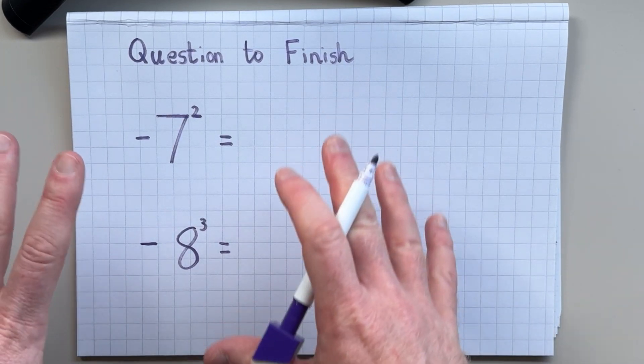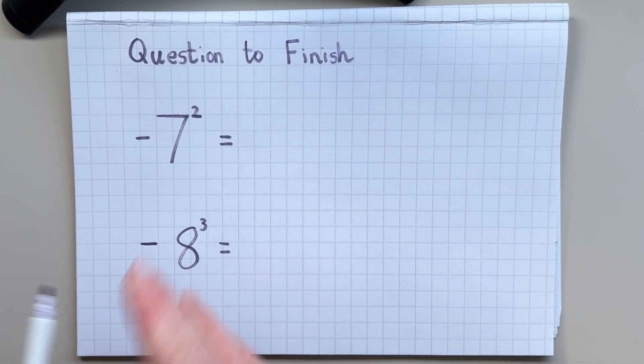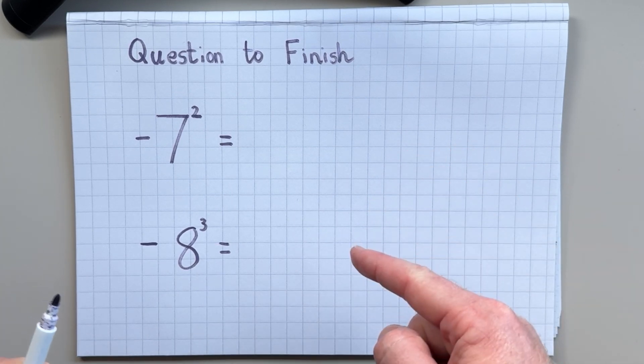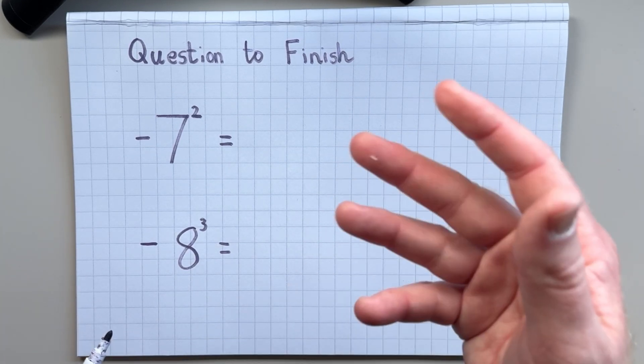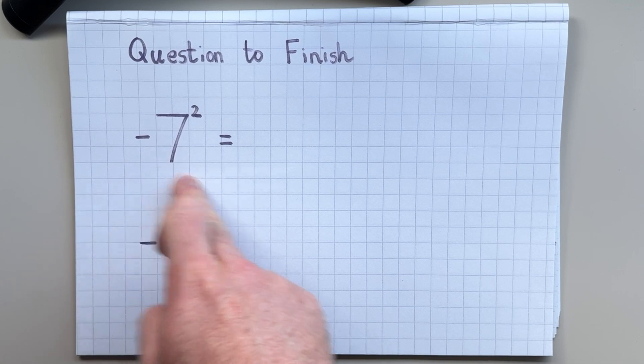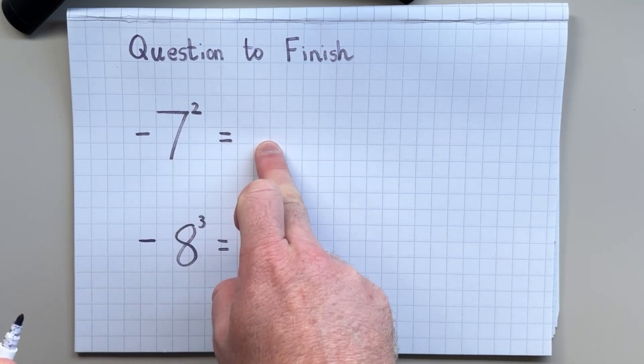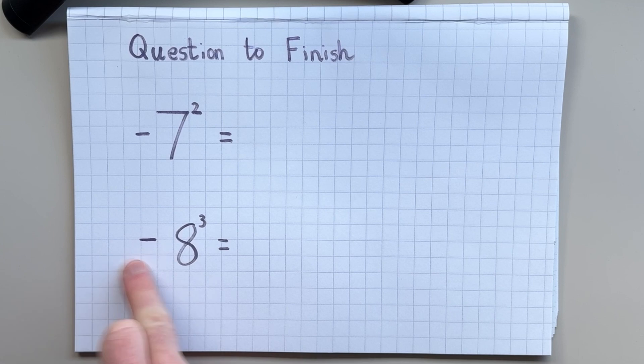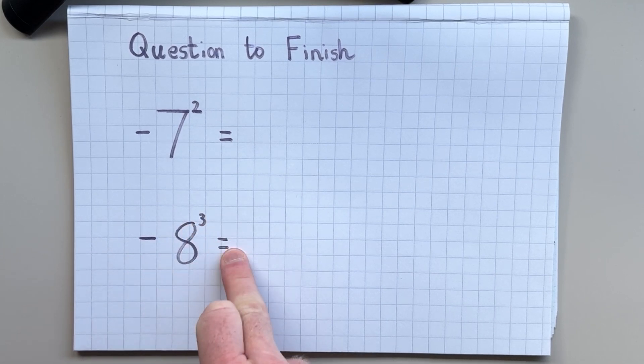So to finish this video, I've got two questions for you. What I'd like you to do is work out the answers. And then when you've worked out the answers, just write them in the comment section down below and I'll check them for you. So the first one is negative 7 squared. What does that give us? And then the second question is negative 8 cubed. What does that give us?